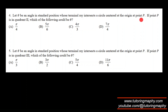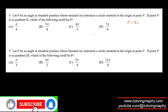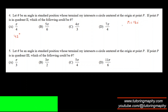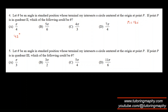Now let theta be an angle in standard position with the terminal ray intersecting the circle centered at the origin at P, and P is in quadrant 2. Which of the following could be theta? It's simply figuring out which angle is actually in quadrant 2. I'm comfortable with degrees — if I replace π with 180°, this converts radians to degrees. This becomes 45°, this becomes 150°, and this becomes 240°. 150° is clearly in quadrant 2, so that's the answer.